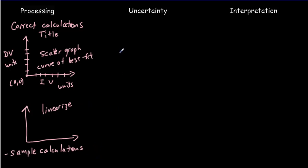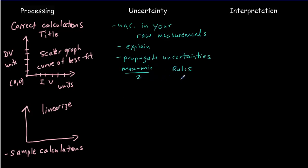For uncertainties, in the minimum case you'd like to have uncertainties in your raw measurements. It's even better if you can explain how you got those uncertainties. Taking it a further step would mean to propagate uncertainties into your dependent variable. That can be done using max minus min over 2, looking at fluctuations over trials. You could also use your rules for propagating uncertainties. Error bars are important, and you can calculate percent differences. If you've done linearization, you can look at uncertainty in slope and y-intercept. If you're propagating uncertainties using the rules, make sure you do a sample calculation.